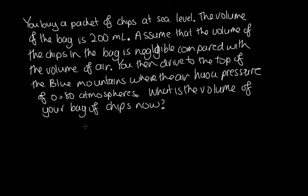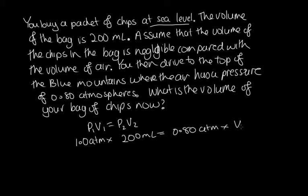So to answer this question, we're going to have to use the relationship P1V1 is equal to P2V2. Now we buy the chips at sea level. At sea level, the pressure is equal to 1 atmosphere. So we've got 1 atmosphere times the 200 milliliters is equal to the pressure at the top of the mountain, which we're told is 0.8 atmospheres, times the volume at the top of the mountain. So this tells us, rearranging, we've got that volume 2 is equal to 1.0 times 200 over 0.8. And the atmospheres will cancel out and we'll be left with the milliliters.